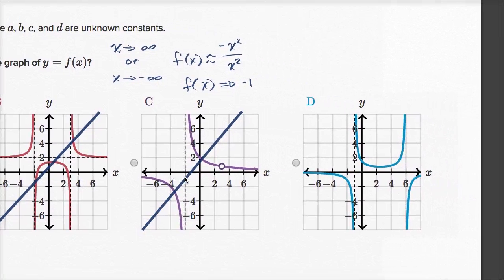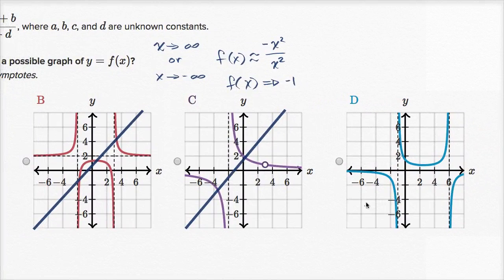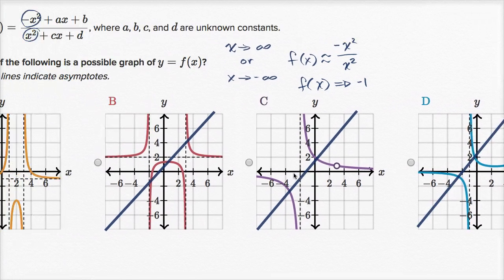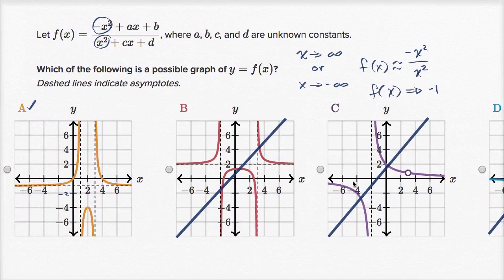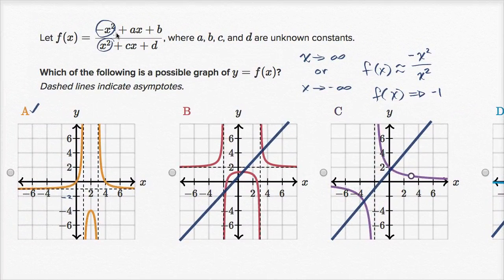And similarly over here, our horizontal asymptote is not y equals negative one. Our horizontal asymptote is y equals zero, so we can rule that one out. And that makes sense because they only gave us enough information to figure out the horizontal asymptote.